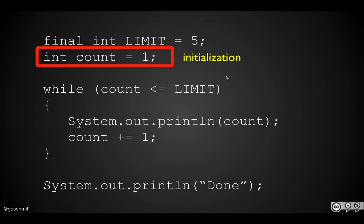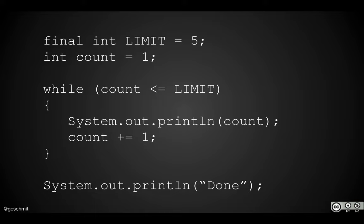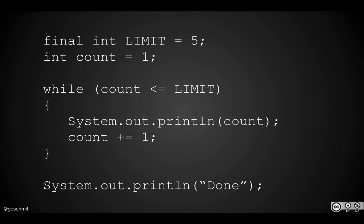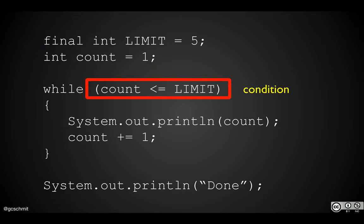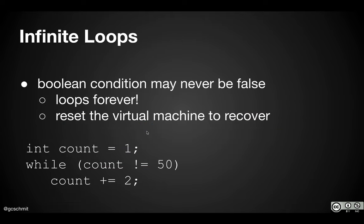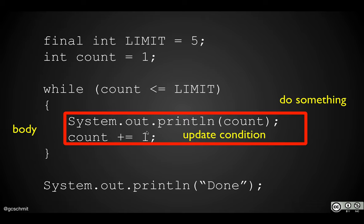One note about while loops. Writing code is obviously helpful, running code is helpful, and the flowchart is helpful. Sometimes it's also helpful just to see the code annotated. In the chapter six slides I've annotated with: here's the initialization, here's the condition, here's the body where we do something — print — and we update that loop variable. Hopefully this helps you as well.